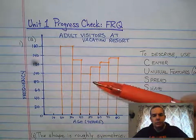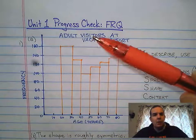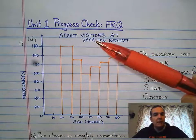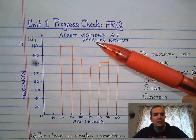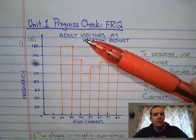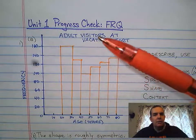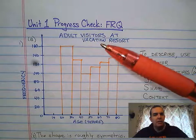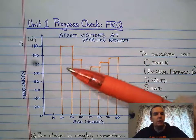Once I was done drawing all the bars, I went ahead and created a label at the top. The label at the top tells exactly what the histogram is — I took it right from the problem: 'Adult Visitors at the Vacation Resort.'